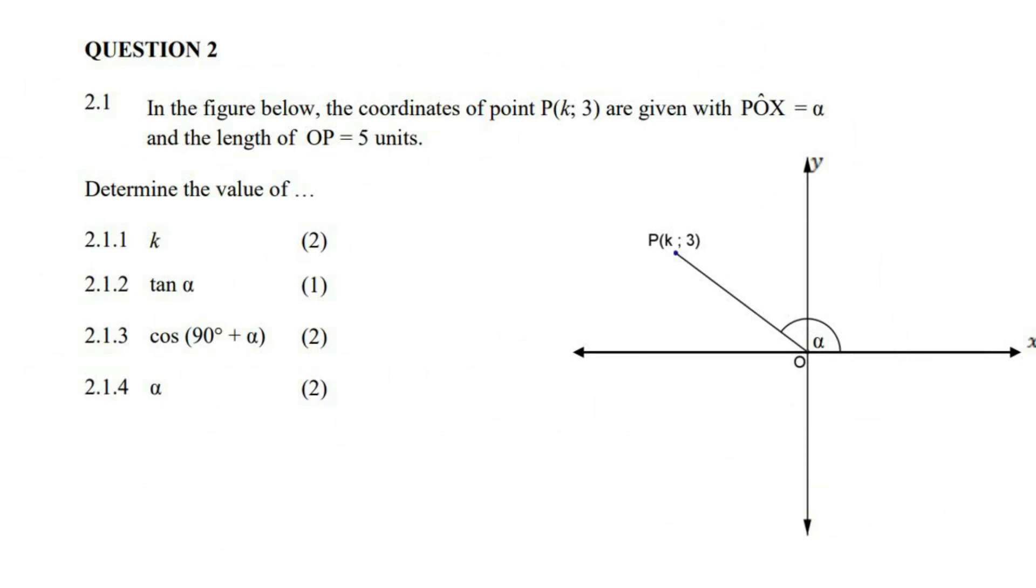In the figure below, the coordinates of point P are given with angle PÔX equal to alpha, and the length of OP is 5 units. So that length over there is 5.